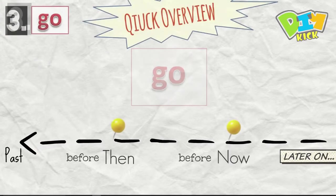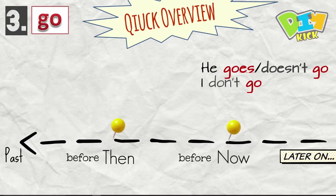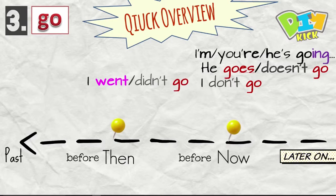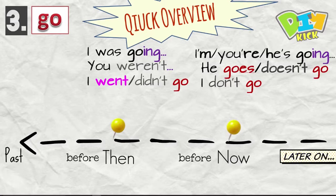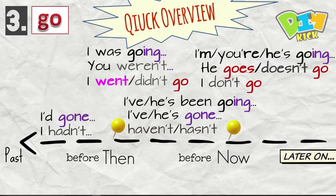Go. Quick overview. He goes. I go. He doesn't go. I don't go. I am going. You're going. He's going. I went. Or I didn't go. I was going. You were going. Or you weren't going. I've gone. He's gone. I've been going. He's been going. I'd gone. I'd been going.